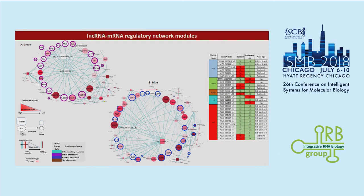The last piece of evidence to establish regulation was to find hubs and bottlenecks in the network, since in biological networks those are important for regulation. We identified lncRNAs in each module that ranked in the top 25 for hub and bottleneck scores. Some were hubs, some were bottlenecks, and some were both — and most of those had enrichment terms consistent with our functional enrichment analysis. This gave us a putative list of regulatory lncRNAs that can be taken into an experimental setup to test.